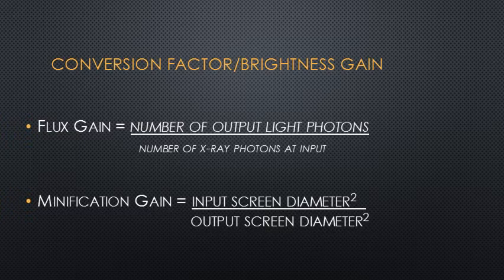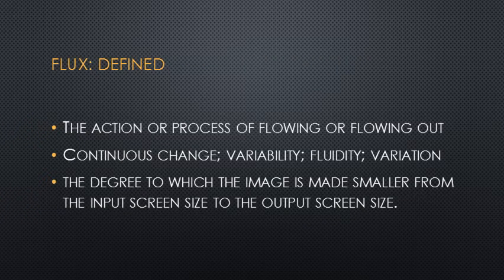Minification is just that — when you think about the design of the image intensifier, the output screen diameter is much smaller than the input screen. The image is made smaller, but has the same number of electrons produced at the input screen, now compressed onto the smaller surface area of the output screen, which makes the image brighter. For example, as stated in Carlton Adler page 539: if the output phosphor produces 50 light photons for every one electron that strikes it, the flux gain would be 50.